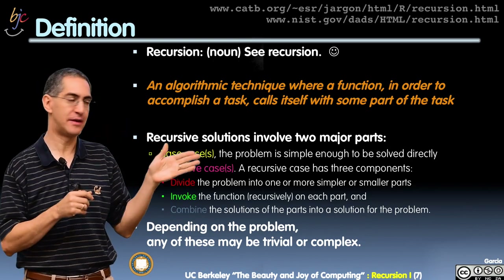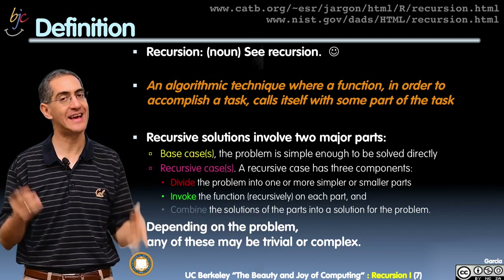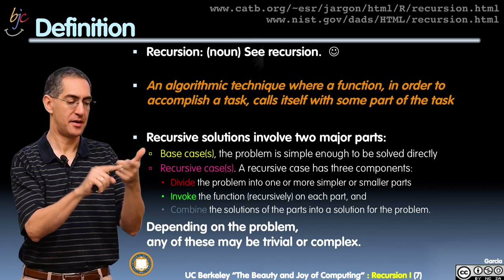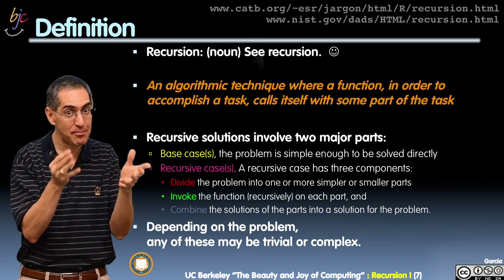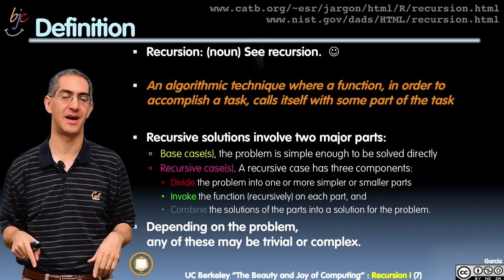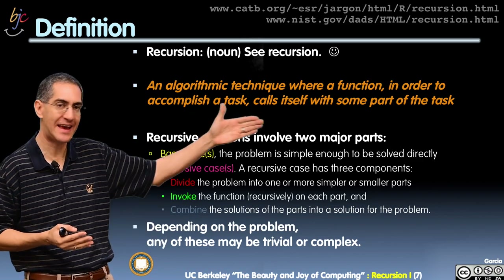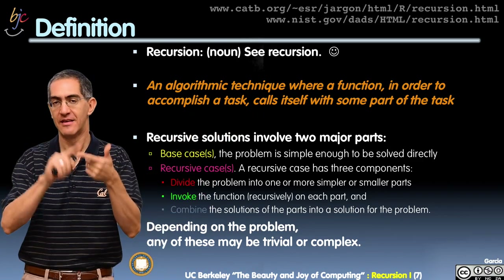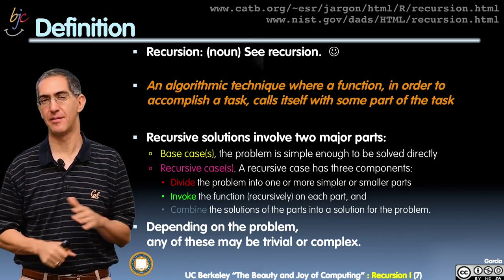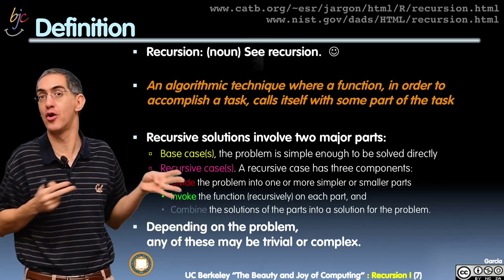There normally are two parts: there's a base case, and there's a recursion case. The recursion case, as we saw in down-up, has the make-it-smaller divide part, the invoke where you call yourself, and the combine part. So it's base case and recursion case, where recursion has three pieces: divide, invoke, combine. Depending on the particular problem, each one of those four parts could be really hard or really simple.